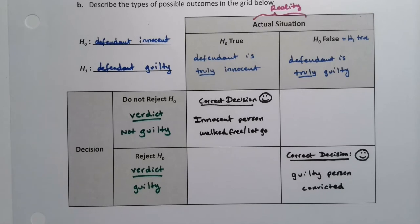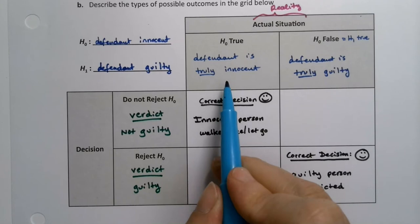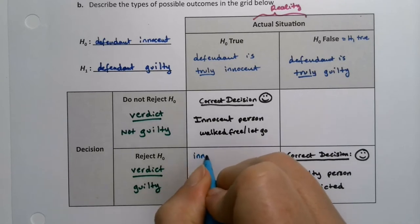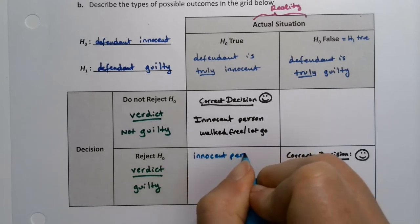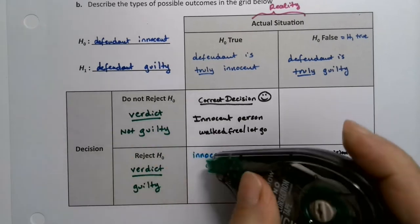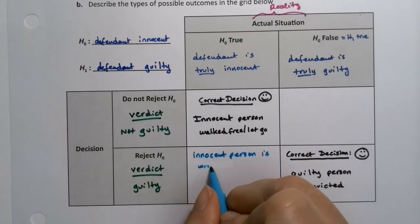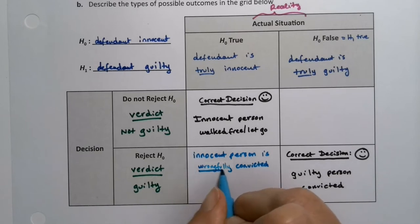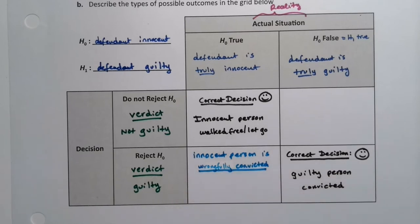So in the bottom left corner, let's do this. This would be a person that is innocent but is convicted. So an innocent person is convicted, is wrongfully convicted, as a matter of fact. That is not good. That is not good at all. That is a false conviction or wrong conviction. And that is a type 1 error.